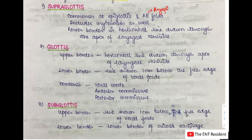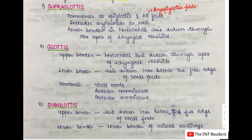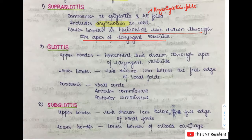As discussed in the anatomy of larynx video on laryngeal inlet boundaries, the structures forming the boundaries include the epiglottis and the aryepiglottic folds — that is where the larynx begins. The supraglottis also includes the arytenoids. The lower border of the supraglottis is a horizontal line drawn through the apex of the laryngeal ventricle. The upper limit of the glottis is at the same line as the lower limit of the supraglottis — the line drawn through the apex of the laryngeal ventricle.